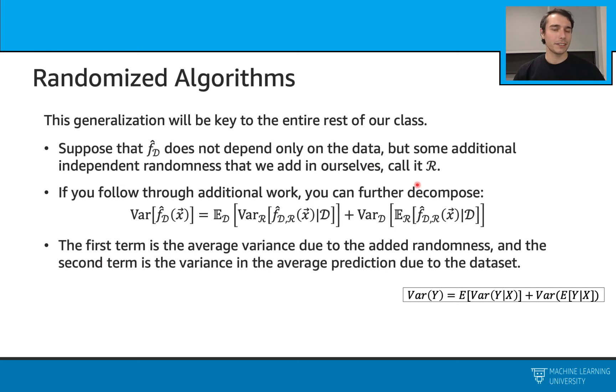Let's follow through this variance term and decompose it into these two terms. We are here using this mathematical trick. And we can write it as the expected value of this variance plus variance of this expected value here. The first term here is the average variance due to the added randomness, and the second term is the variance due to the dataset.